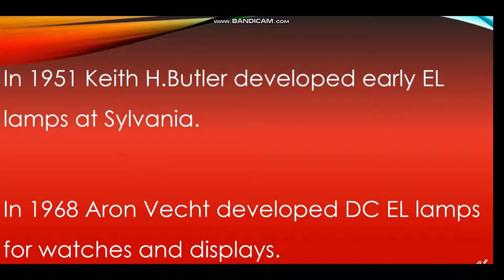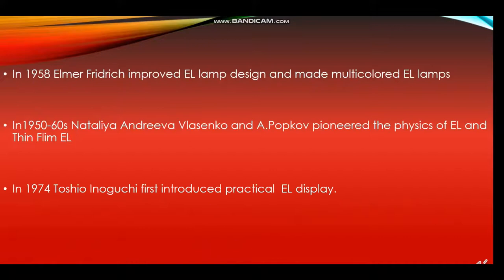In 1951, Keith H. Butler developed early electroluminescence lamps at Sylvania. In 1968, Aaron Vect developed DC electroluminescence lamps for watches and displays. In 1958, Elmer Friedrich improved electroluminescence lamp design and made multicolored electroluminescence lamps. From 1950 to 1960, Natalia Andreeva Vilasenko and Adot Popkov pioneered the physics of electroluminescence and thin-film electroluminescence.